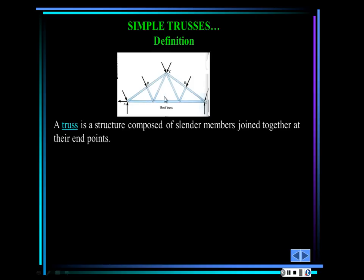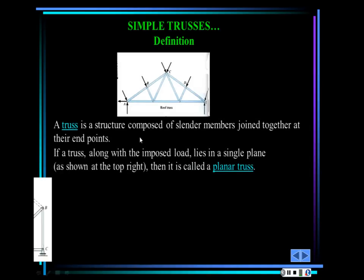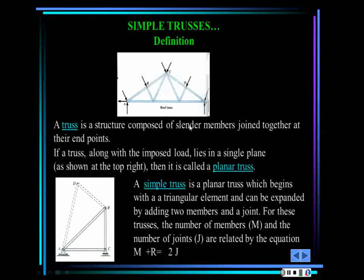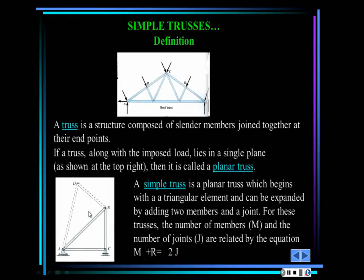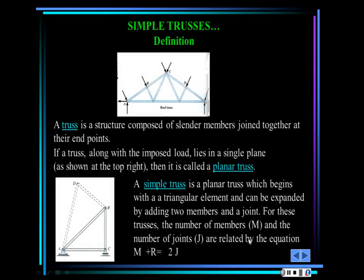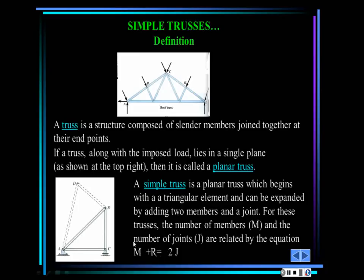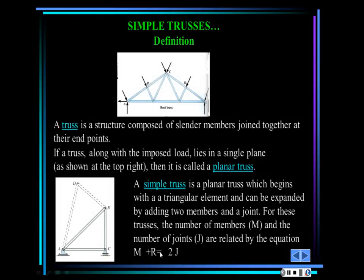Just because something looks like a truss doesn't mean it is one. How do you build a truss? You start with a basic triangle of three elements, then keep adding two elements at a time. The number of members plus the number of reactions in the supports must equal two times the number of joints. If that condition is met, the truss is statically determinate.